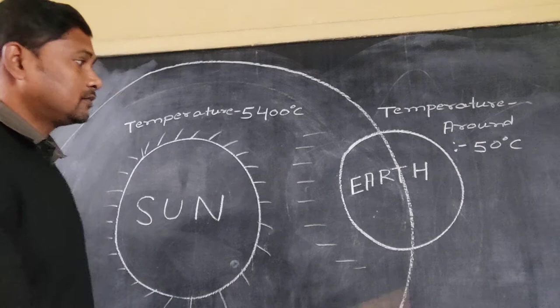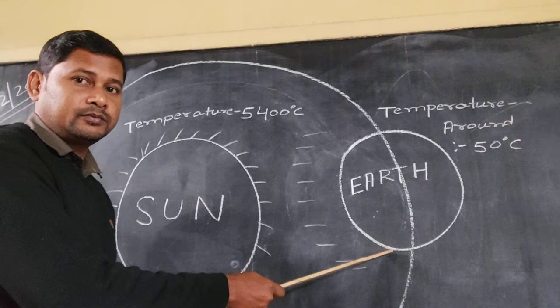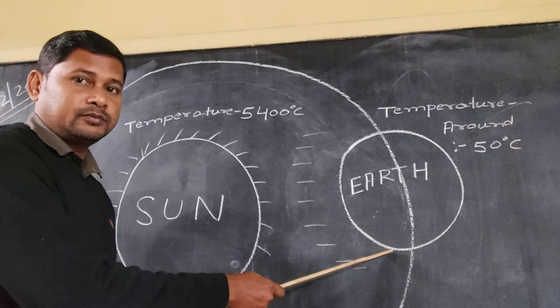I think you have understood this one. The Earth is moving around the sun on a fixed path that is known as the orbit, and the movement of the Earth around the sun is known as revolution. The temperature of the Earth is around 50 degree Celsius, the sun is made up of hot gases, and the temperature of the sun is around 5400 degree Celsius.